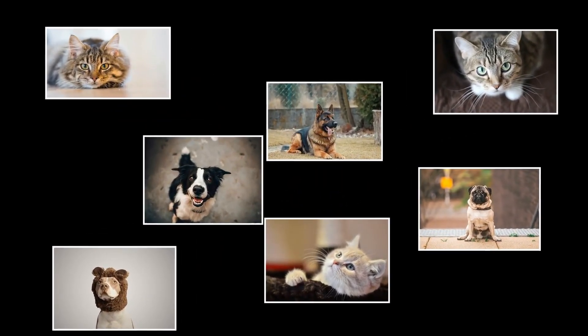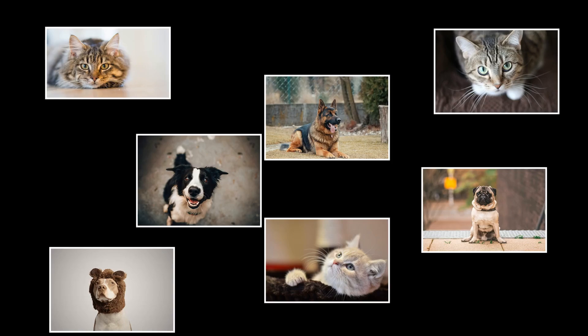The internet is filled with an endless supply of images, so why aren't we using all of this data to train our models? Well, typically to train a deep learning model, we need both the images and their corresponding labels.